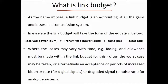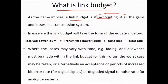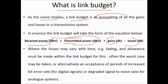As the name implies, a link budget is an accounting of all the gains and losses in the transmission system. In essence, the link budget takes the form of this equation: received power in dB equals the transmit power plus all the gains — receiver and transmitter antenna gains — minus the losses.